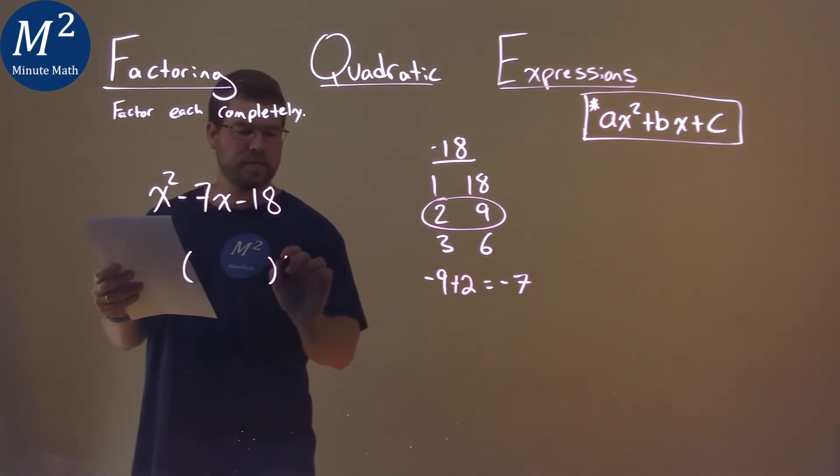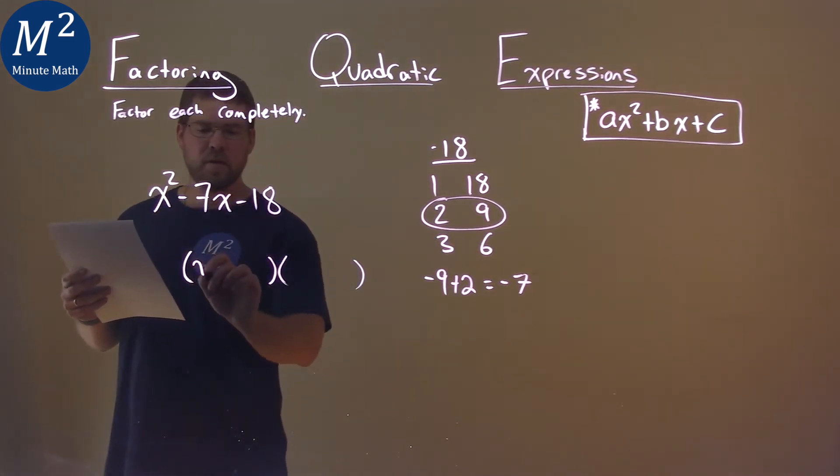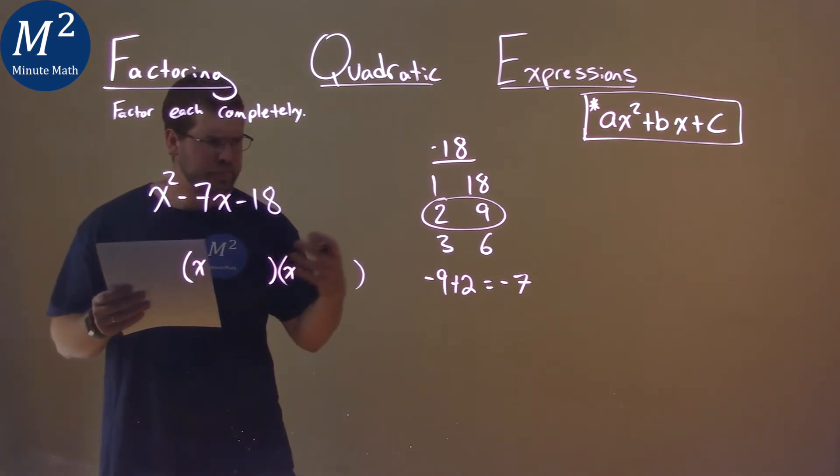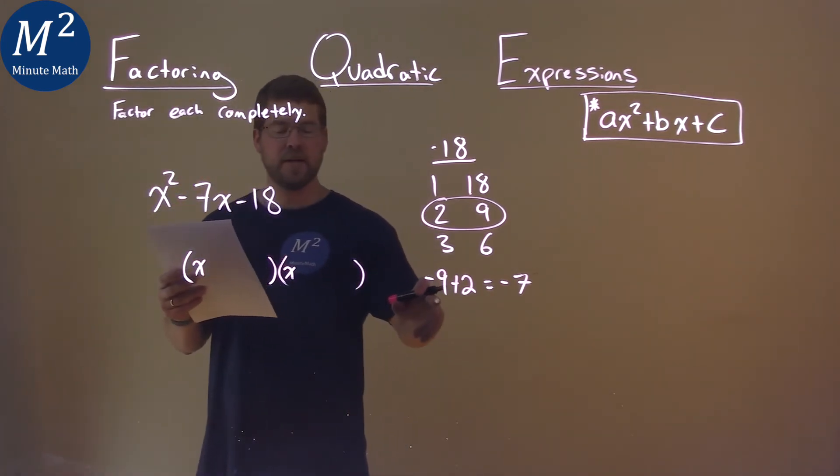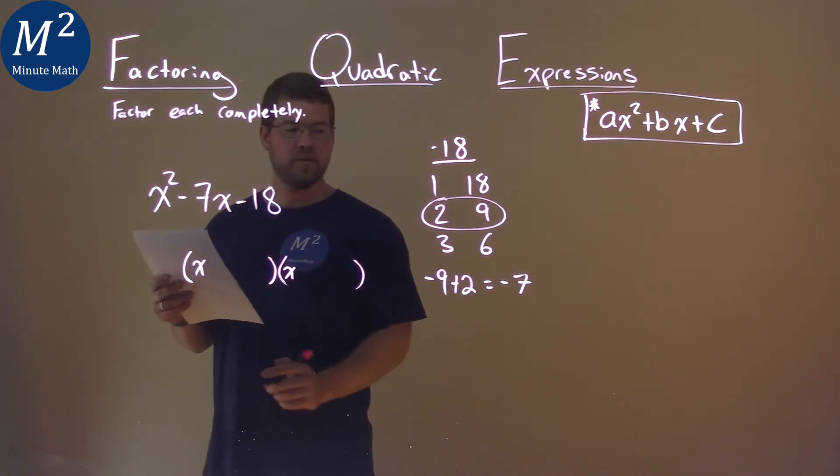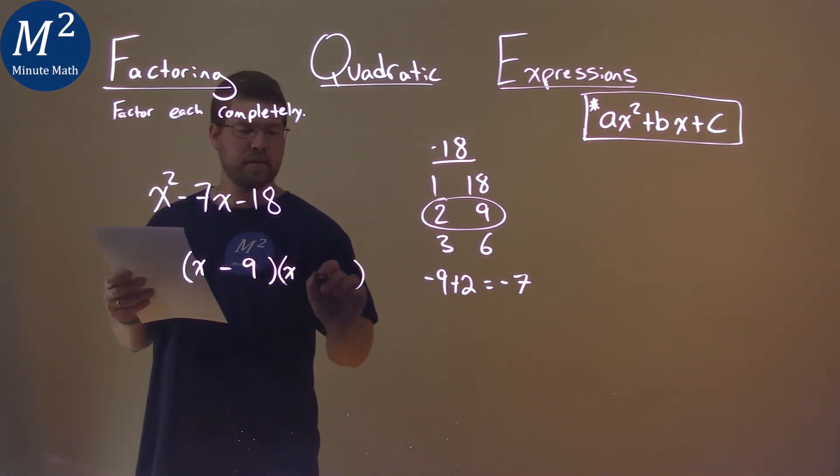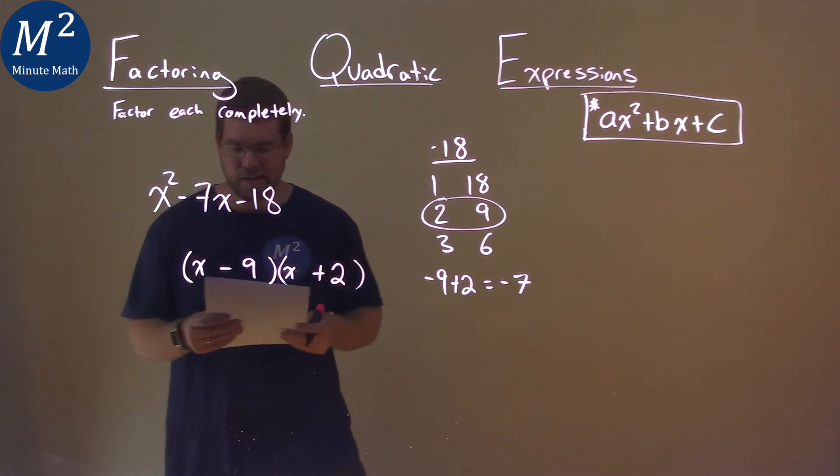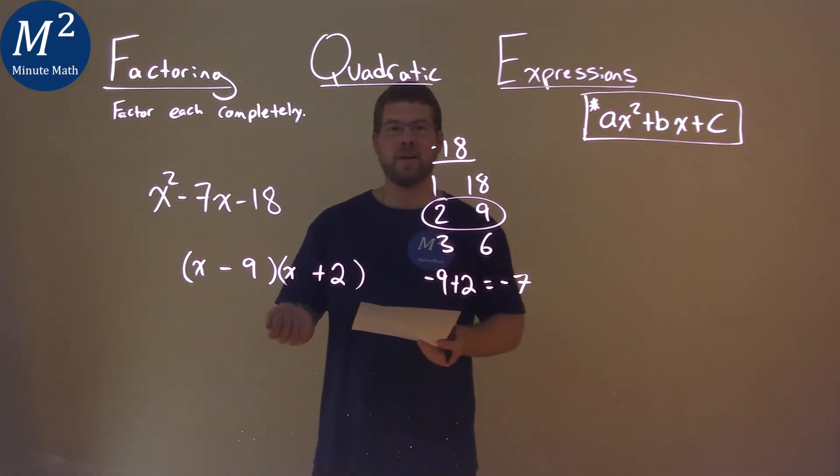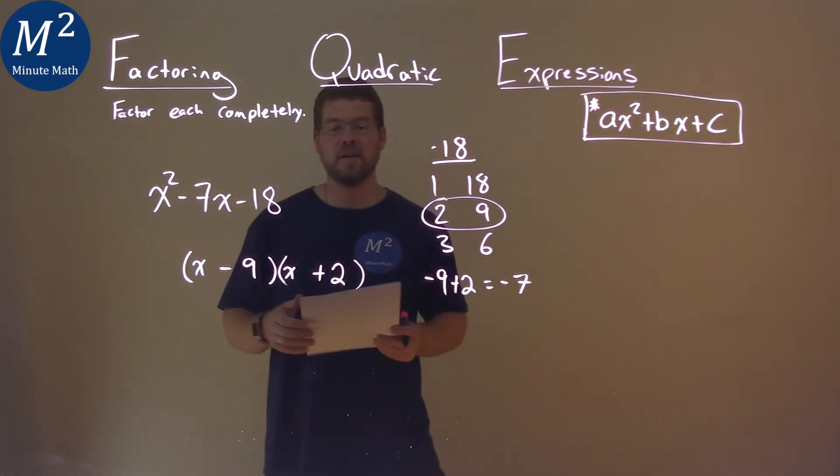We have our x here, our form. We have x times x. The two numbers that multiply to be negative 18 but add to be a negative 7 are negative 9 and positive 2. So we put a minus 9 here, plus 2. And that is it. That is our final answer, x minus 9 times x plus 2.